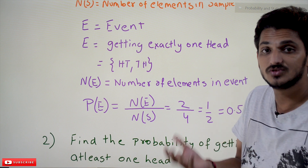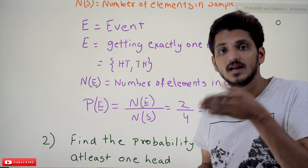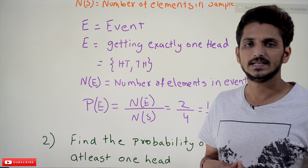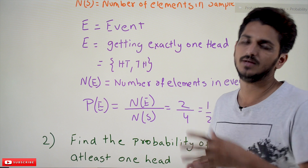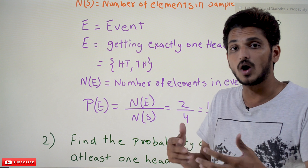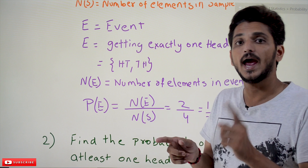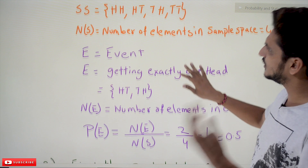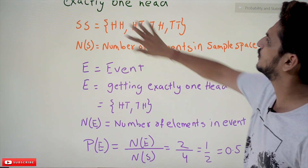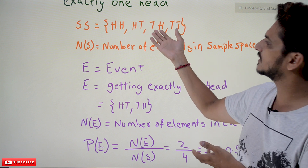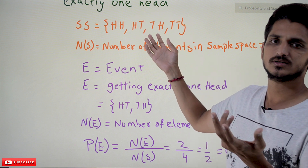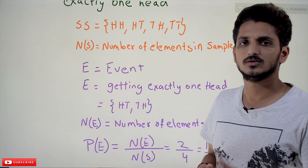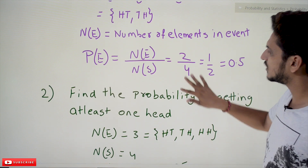That means there is a 50% chance of obtaining exactly one head when we toss two coins. Another simple way to understand: out of these four events, two events are required for us — two out of four means 50% chance. This is how we find the probability value.